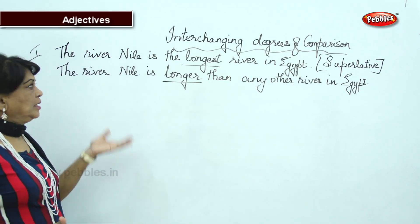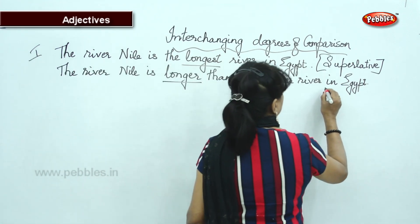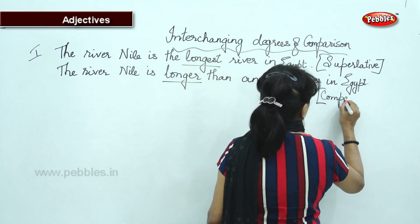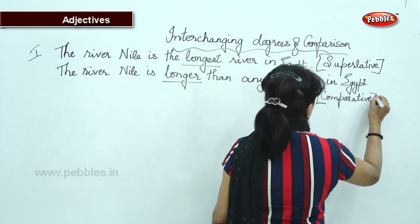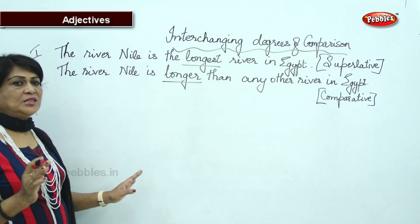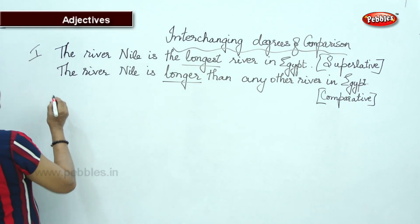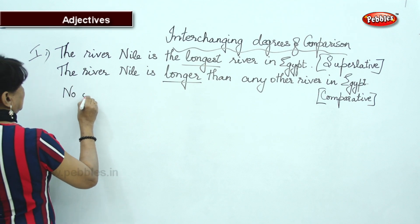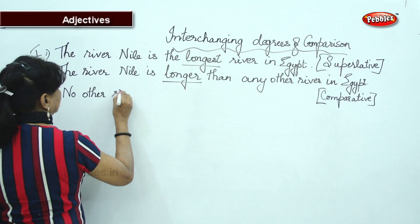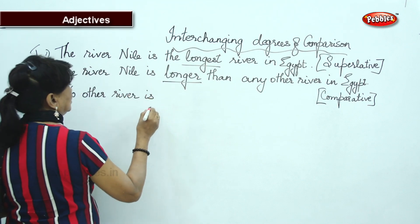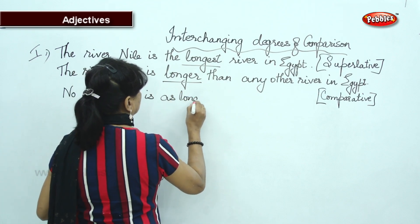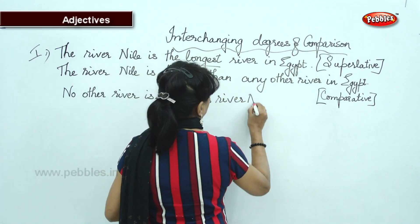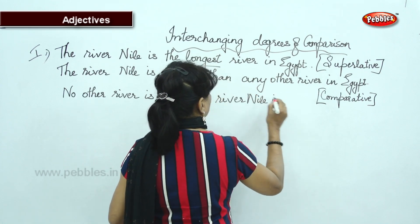Without changing the meaning, I changed the superlative into comparative — longer is comparative. Now, again without changing the meaning, we are going to change it into positive degree: 'No other river is as long as river Nile in Egypt.'